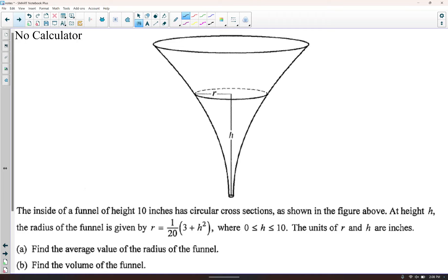The inside of a funnel of height 10 inches has circular cross-sections as shown in the figure above. At height h, the radius of the funnel is given by r equals 1 20th times 3 plus h squared, where 0 is less than or equal to h is less than or equal to 10. The units of r and h are inches. Part A, find the average value of the radius of the funnel. So the average value of a function is 1 over b minus a, so 10 minus 0, integral from 0 to 10 of 1 over 20, 3 plus h squared dh. So that'd be 1 over 200 if we pull out the 1 20th, 0 to 10, of just 3 plus h squared dh. And I assume you know how to take the integral of a polynomial.